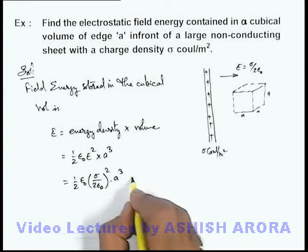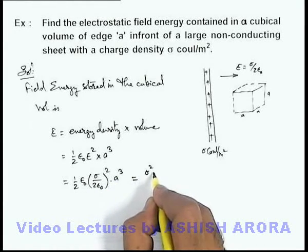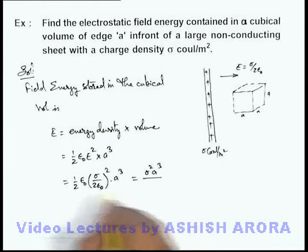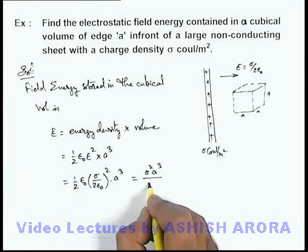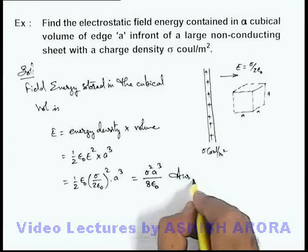So the final result we are getting here is σ² a³ by, one ε₀ gets cancelled out and is 8ε₀. That will be the answer to this problem.